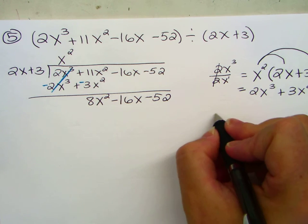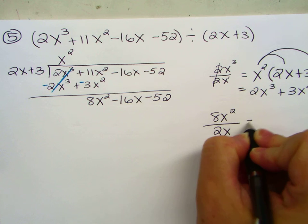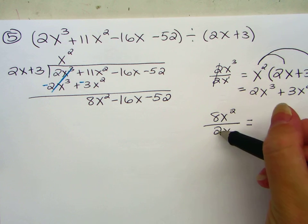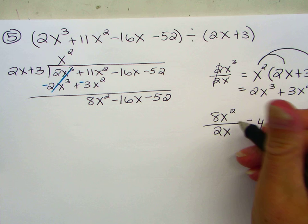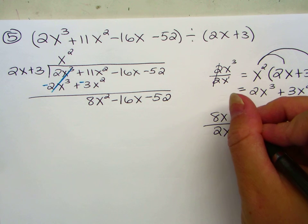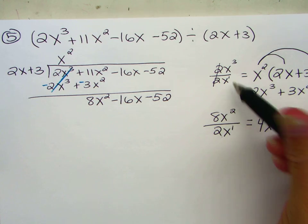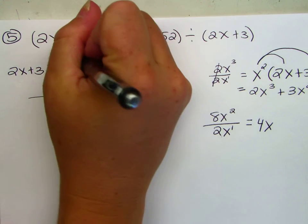Repeat. Highest term. When we divide, 8 divided by 2 is 4, x squared divided by x is x. Again, remember there's a 1 there, 2 minus 1 is 1. We divide by the same thing every time. 4x goes on top.